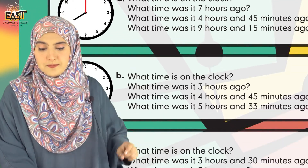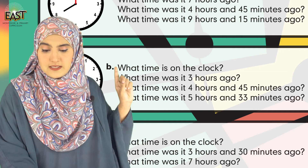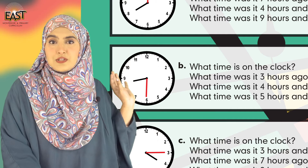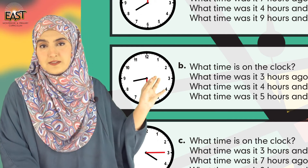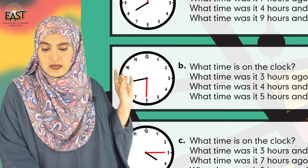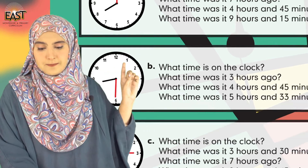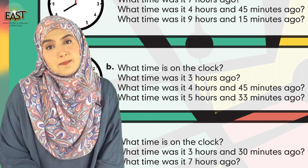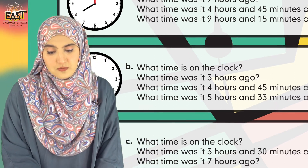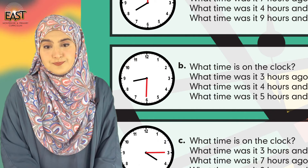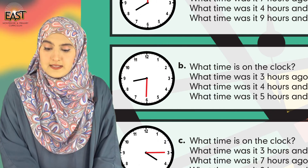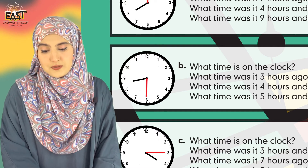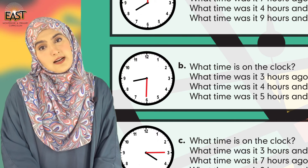Moving to the next part. What time is it on the clock right now? In Part B it is exactly eight thirty — 08:30. What time was it three hours ago? If it is eight thirty right now, taking the clock three hours back: the time must be five thirty.